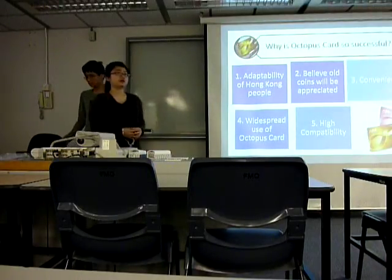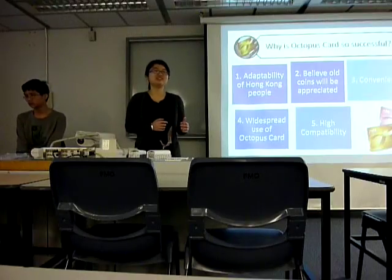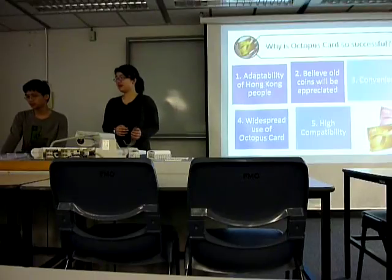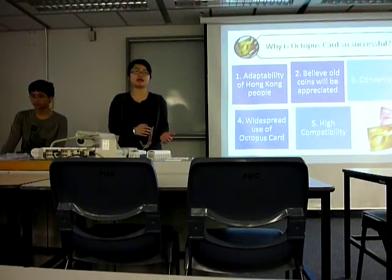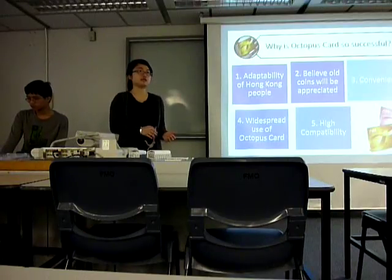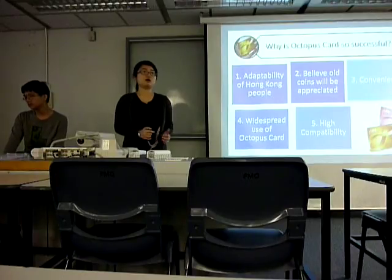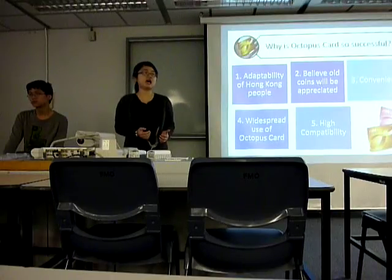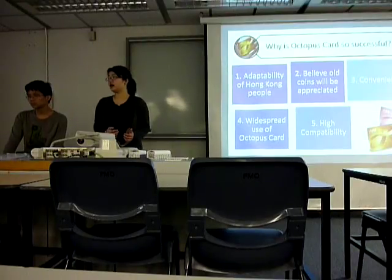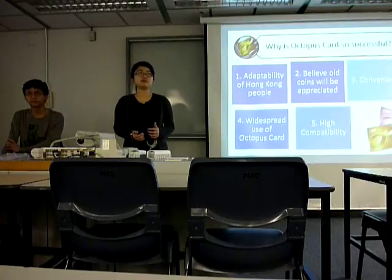So why is the Octopus card so successful? First of all, Hong Kong people's adaptability contributed a lot. Because before the inception of the Octopus card, there was already a kind of store-value card in Hong Kong, and people had already adapted to it. So people could adapt to using the Octopus card very quickly after its launch. Then, around 1997 when the Octopus card was launched, there was a common belief that old coins would appreciate in value, so people had the habit of keeping old coins, resulting in a lack of coins in the local market. And third, the Octopus card brings great convenience to customers, is highly compatible, and can be used in many areas — people really love it.